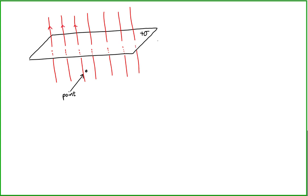That planar symmetry essentially says that the electric field is uniform. Being uniform, the electric field has a constant magnitude above and below the plate. Regardless of how far away we are from this plane of charge, the magnitude of the electric field is going to be constant, because we're making the approximation that this plate is infinitely large and the point is very close to the plane.